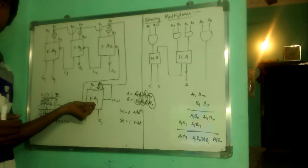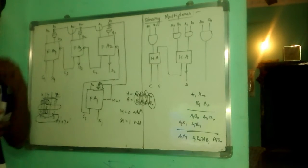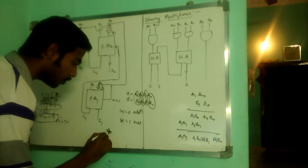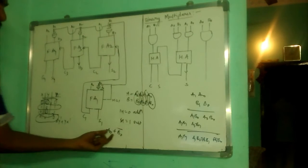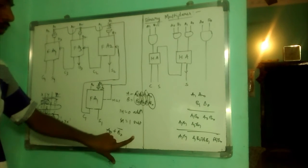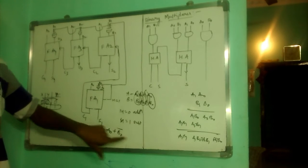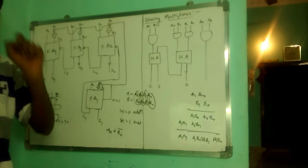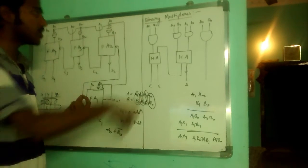So, it is a full adder subtractor. It adds both A0 and B0 complement, both A0 plus B0 complement. This is nothing but subtraction. This is the 2's complement of B0. So, whenever we add A0 to 2's complement of B0, that gives the subtraction.